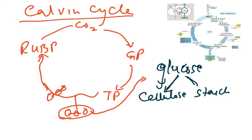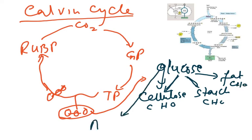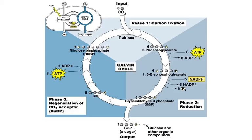From glucose the plant makes everything it needs. Cellulose is made for new cell walls, starch for storage, and fat. Carbohydrates contain carbon, hydrogen, and oxygen. However, for glucose to be converted into amino acids, the plant also needs nitrates from the soil. All of this glucose is converted to everything needed for new cells and plant growth.